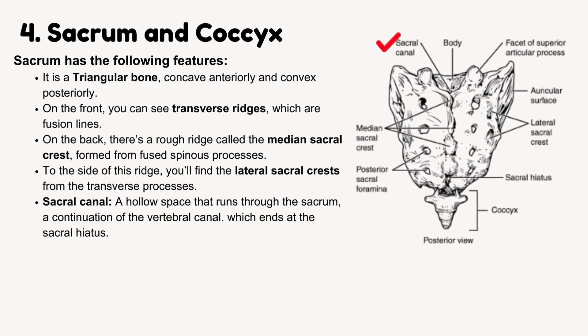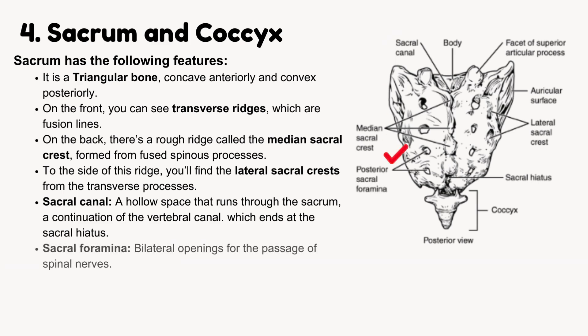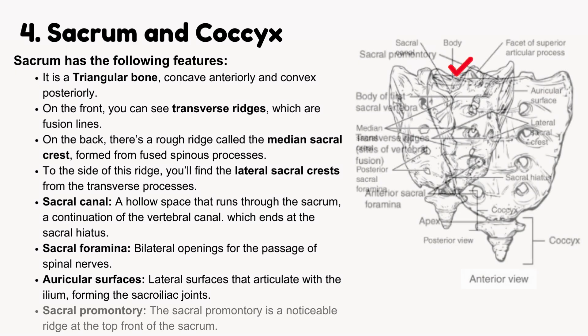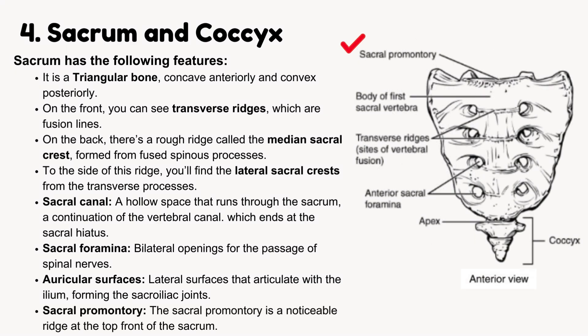The sacral canal is a hollow space that runs through the sacrum, a continuation of the vertebral canal, which ends at the sacral hiatus. Sacral foramina are bilateral openings for the passage of spinal nerves. Auricular surfaces are lateral surfaces that articulate with the ilium, forming the sacroiliac joints. The sacral promontory is a noticeable ridge at the top front of the sacrum.